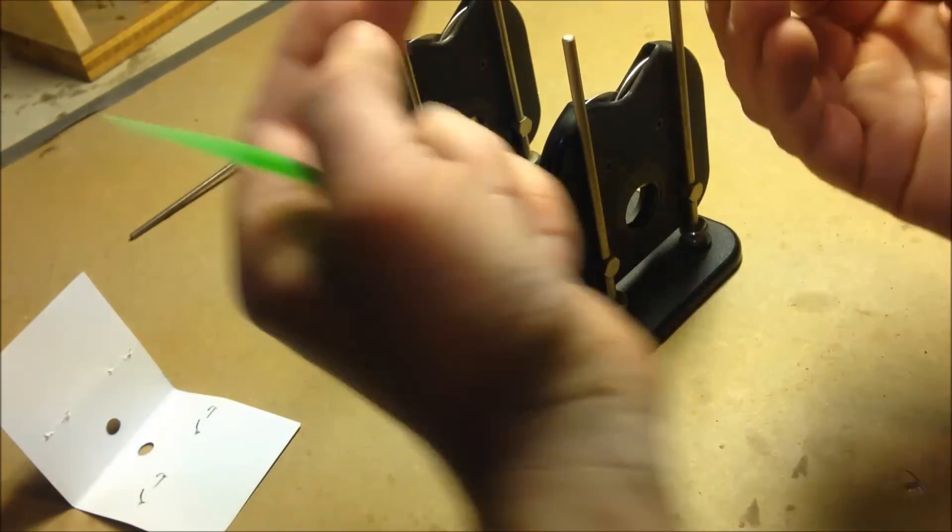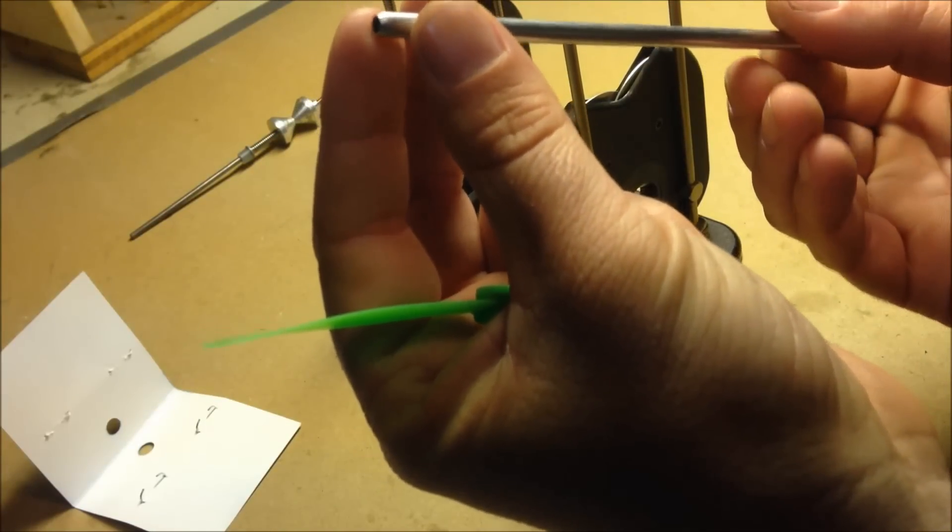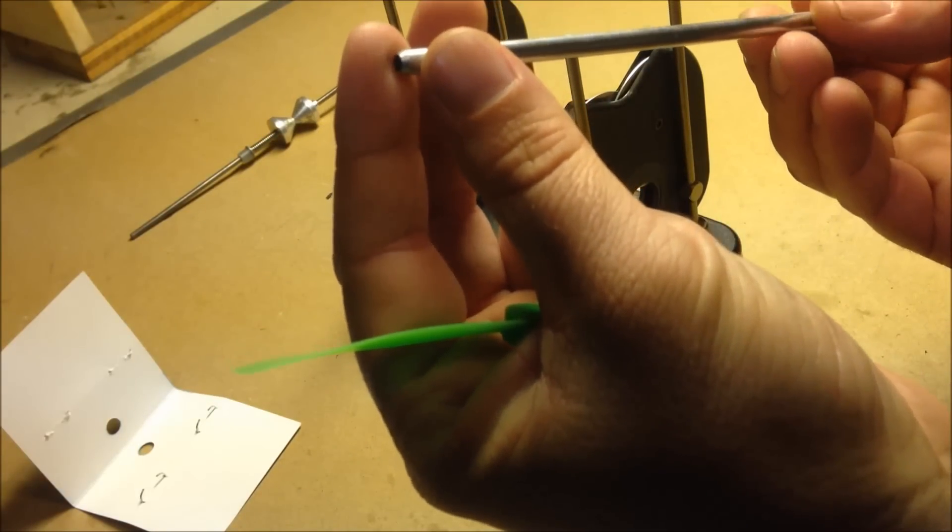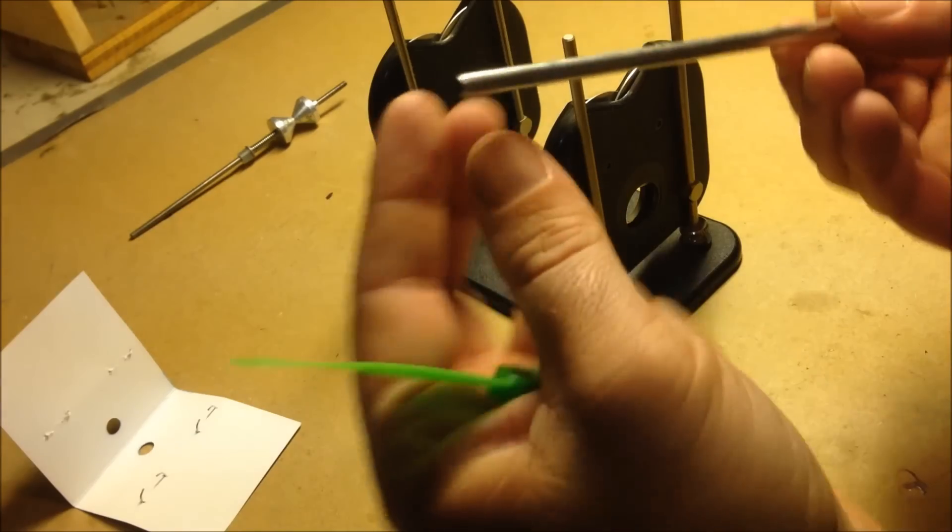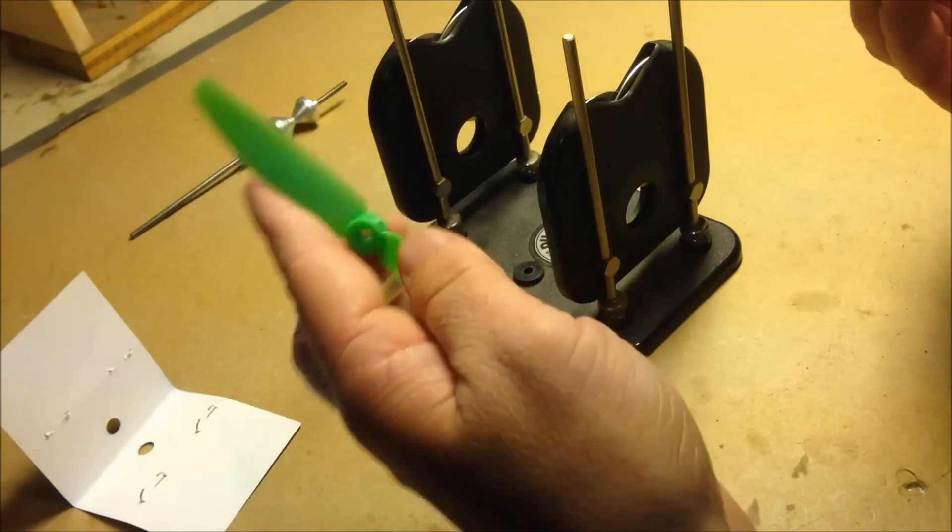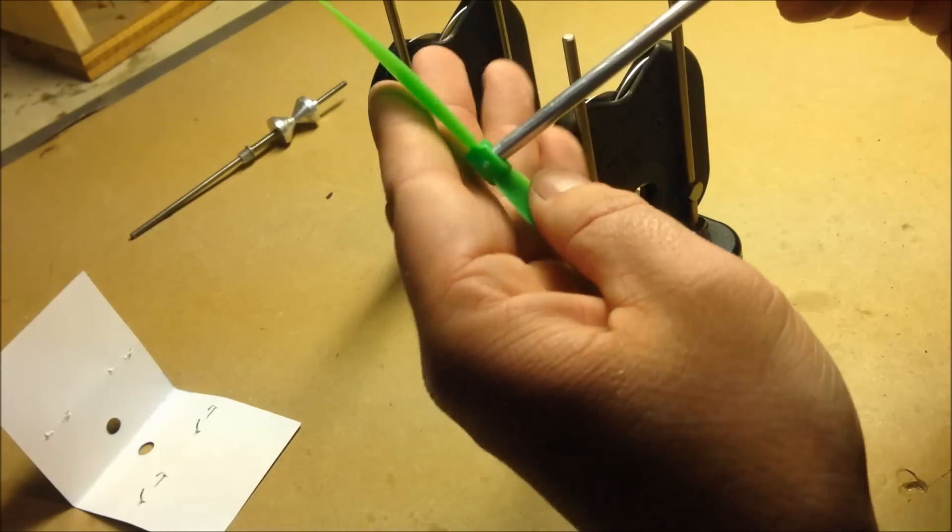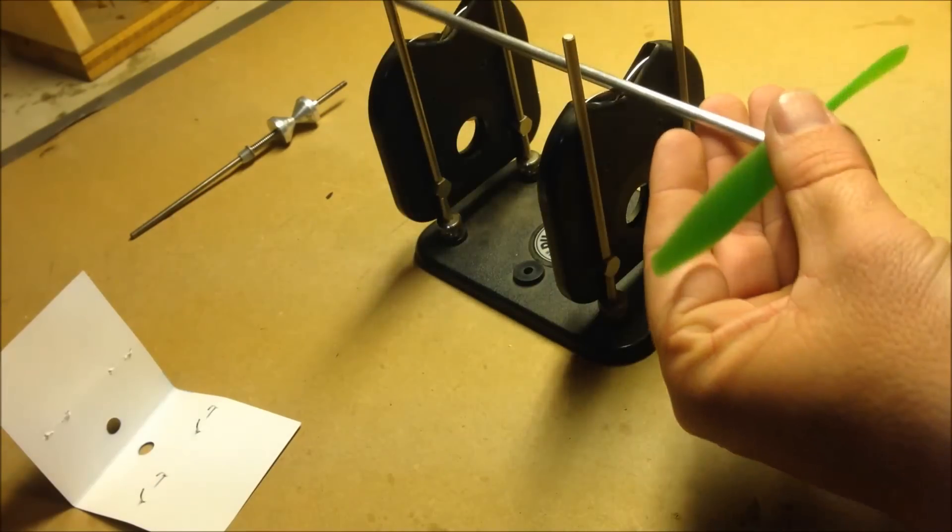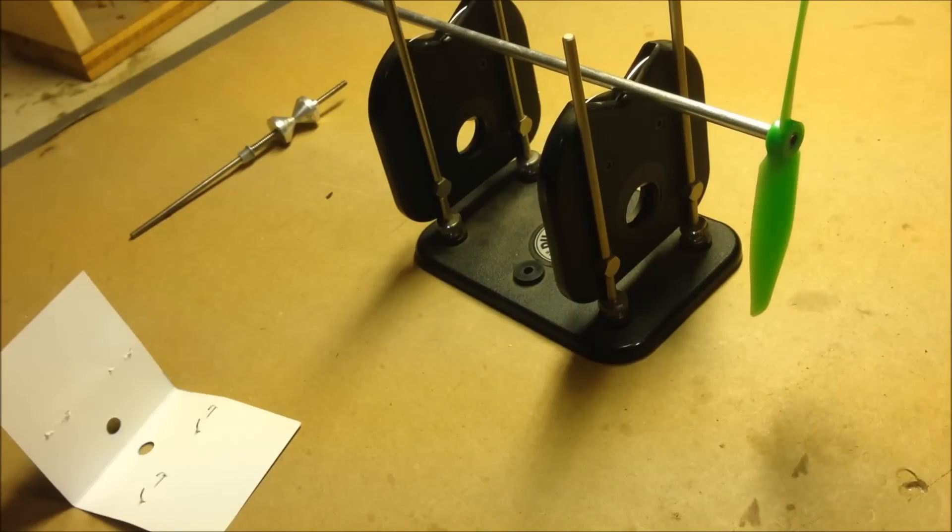I also cut myself a nice little edge here so it's not just a blunt end. This is easier to get on the props. Right here, got a brand new Gemfan 5.4, guaranteed to be off. Stick it on there - there's our heavy side.